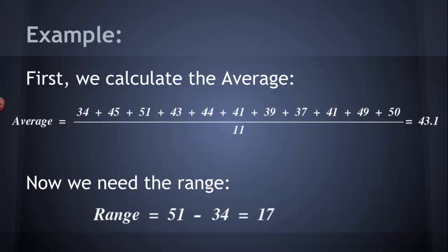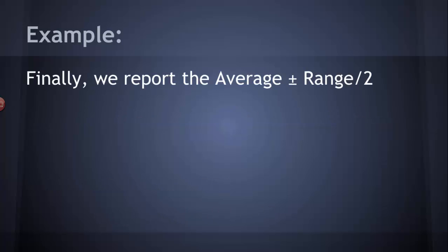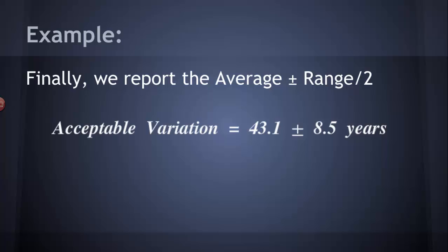So to report the acceptable variation, it's the average plus or minus the range divided by 2. The average was 43.1. The range was 17. Divide that by 2, you get 8.5. And so the acceptable variation is 43.1 plus or minus 8.5 years. That's the range. So if you want to be acceptable in terms of this data set, it has to fall within that range. It has to fall 8.5 years smaller than 43.1 or larger than 43.1.